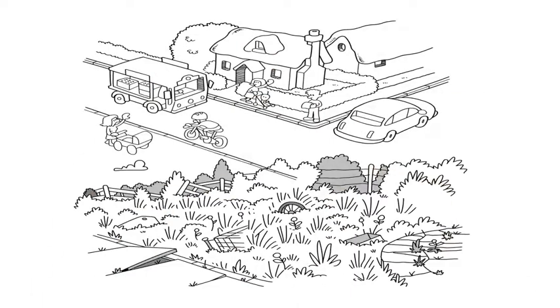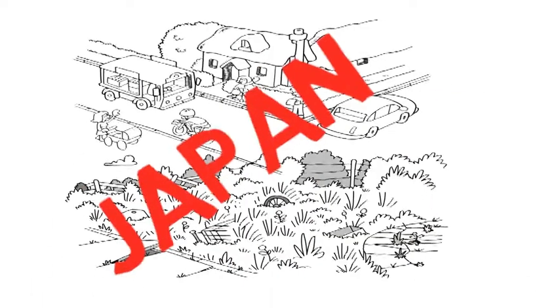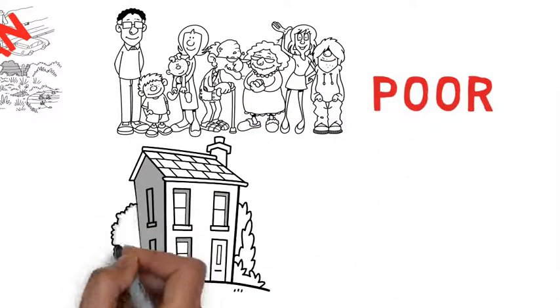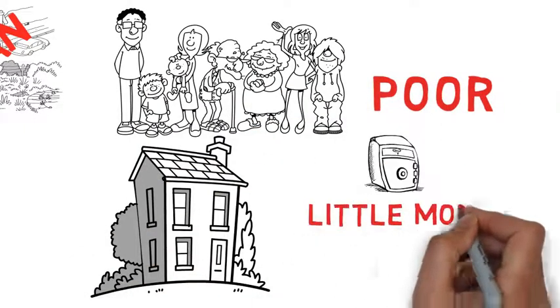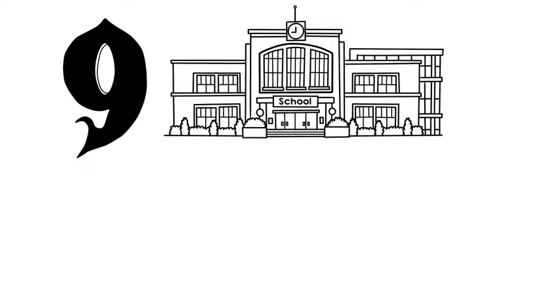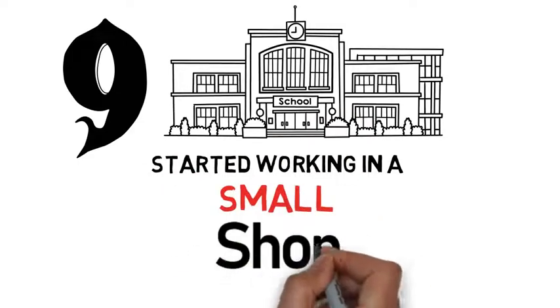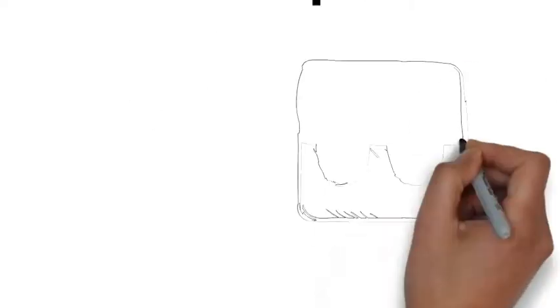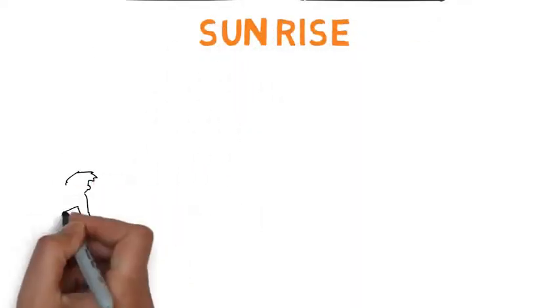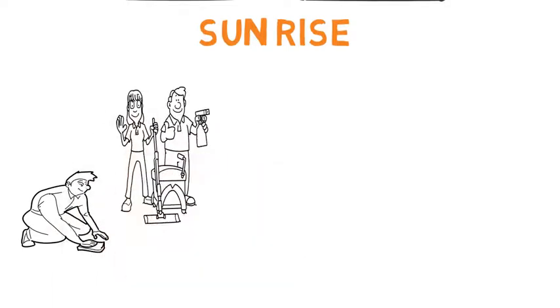He was born in a small farming village in Japan. His family was poor. They all lived in a small house with very little money. When he was only nine years old, he left school and started working in a small shop to support his family. He used to get up every day before sunrise, clean the store, run errands, and then look after the children of his employer.